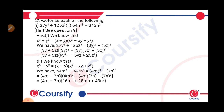The second question is 64m cube minus 343n cube. It is again of the form x cube minus y cube, where x is equal to 4 — since 4 cube is 64 — and y is equal to 7, since 343 is the cube of 7.